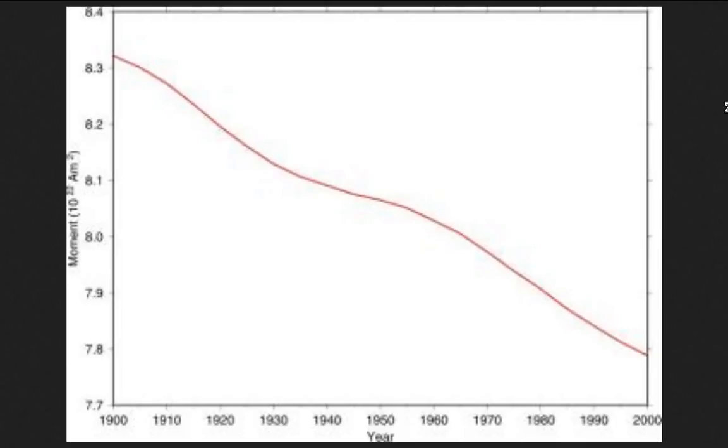This is the magnetic field of what? It's changing over what period of time from 8.3, let's call it, to 7.8. Okay, is that your 35% reduction?